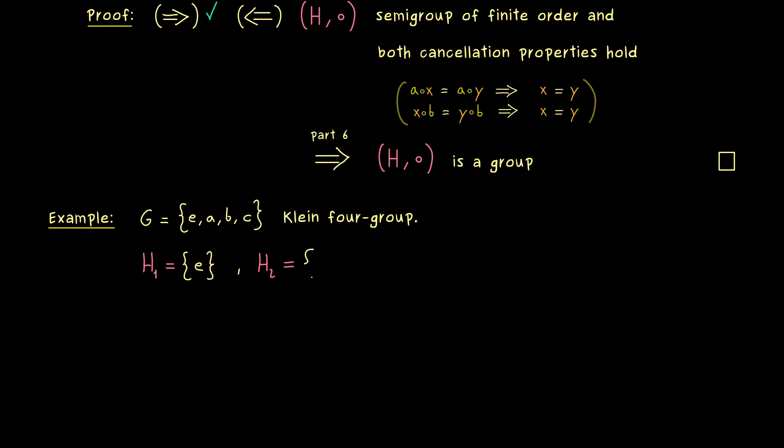We can check that with the proposition above, because we cannot leave the set H2 with the binary operation. Because A with A brings us to E again.